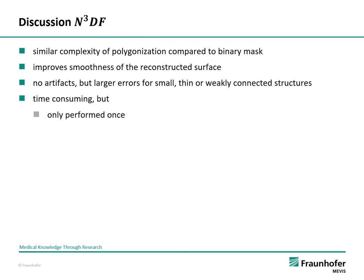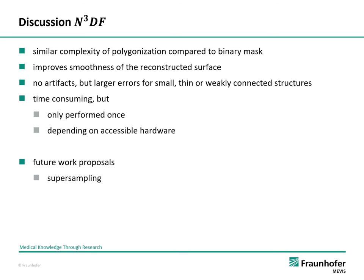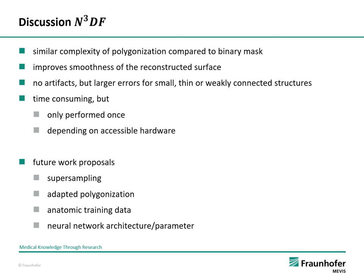For future work, super sampling can be a solution to reduce the maximum error for small, thin, or weakly connected structures. Adapted polygonization can reduce the complexity of the constructed surface. The neural network can also be trained with anatomic data instead of artificial data, and the neural network architecture or parameters can be changed to improve the N3DF. The overall conclusion is that N3DF is an already promising approach with potential for improvements. Thank you very much for your attention.